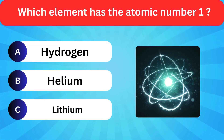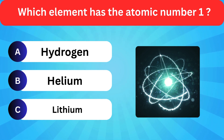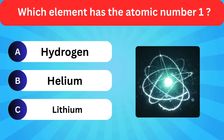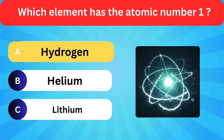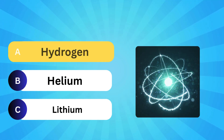Which element has the atomic number 1? Options: Hydrogen, Helium, Lithium. Correct answer is hydrogen.